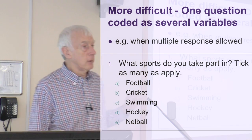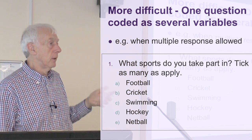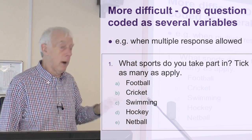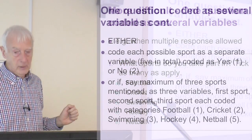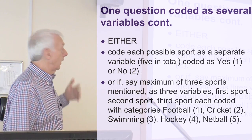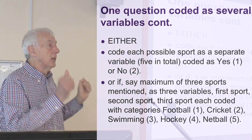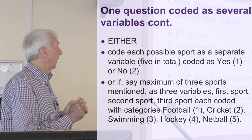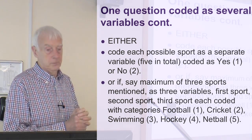And for each of those variables, I can give it a value of yes or no — one and two or whatever — which I've given you here. So if they tick that one, it's yes, and it's given a score of one, and if they don't, it's two.